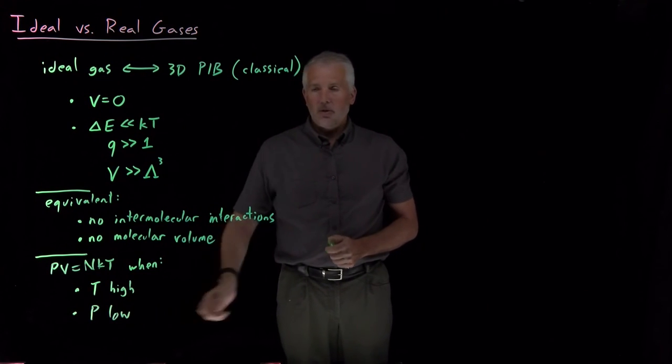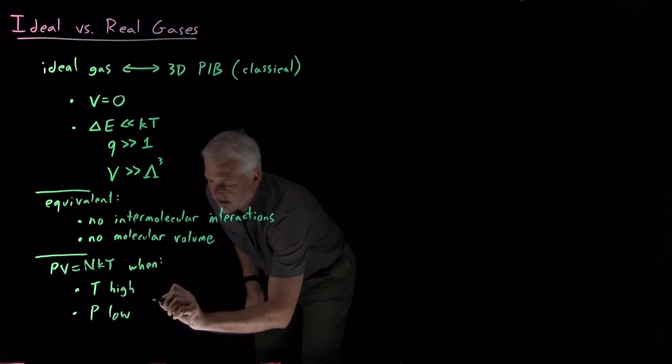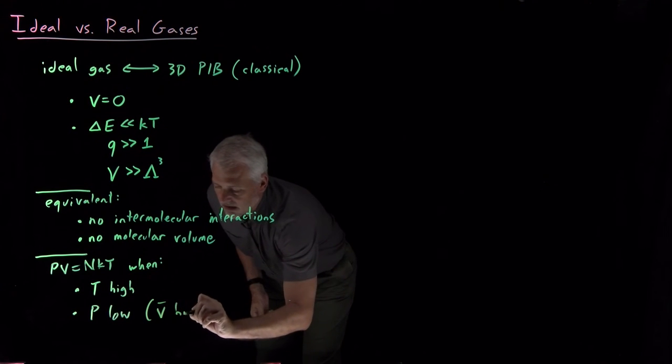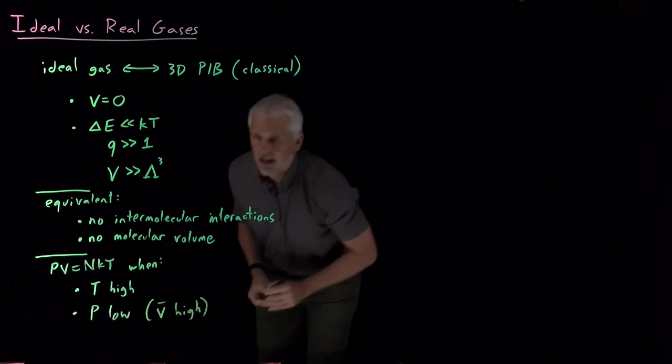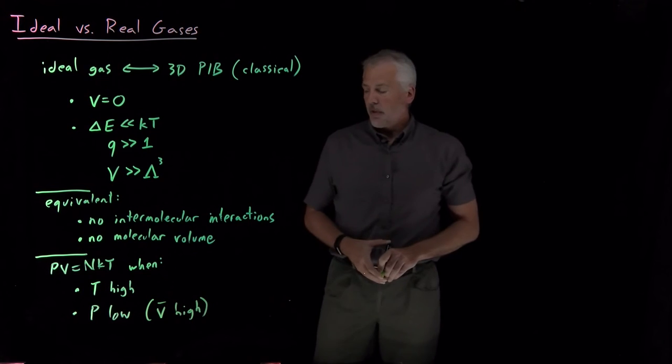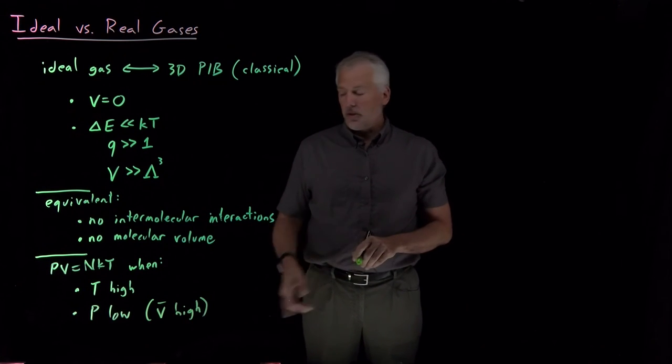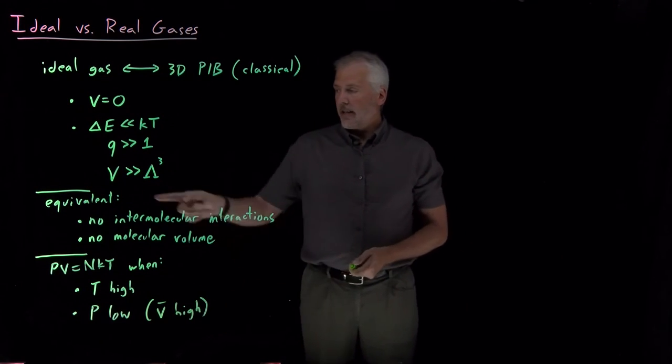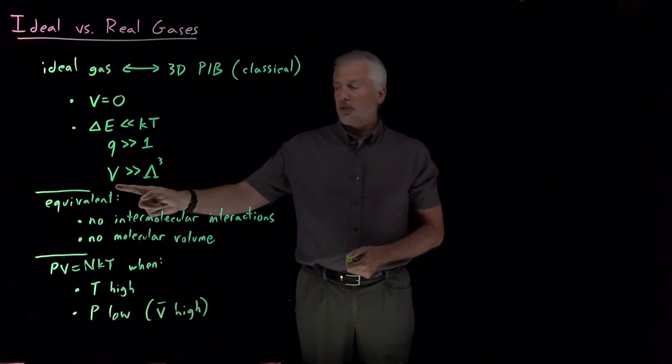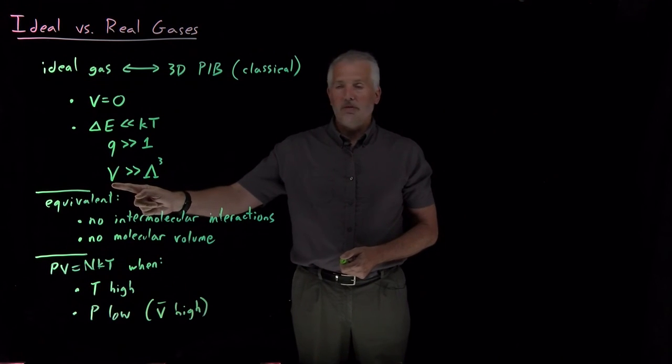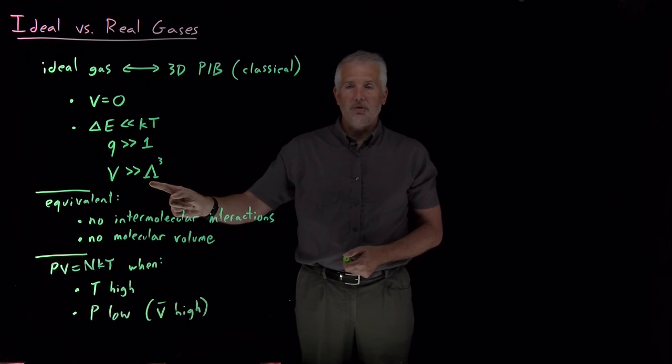Pressure being low, that's like saying the molecular volume is high, the volume occupied by the volume of the container divided by the number of molecules is a large number. And that's, again, equivalent to this expression where if the container volume is very large compared to the size of the molecules themselves, then the ideal gas approximation works just fine.